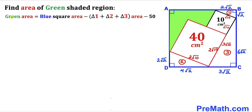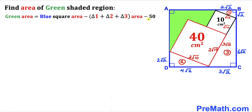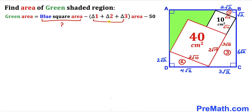Now let's make an observation: the green shaded area equals the area of the big blue square minus the sum of all three triangle areas (triangles 1, 2, and 3), minus the area of the two squares (40 + 10 = 50). So our task is now to calculate the area of the big blue square and each of the three individual triangles.